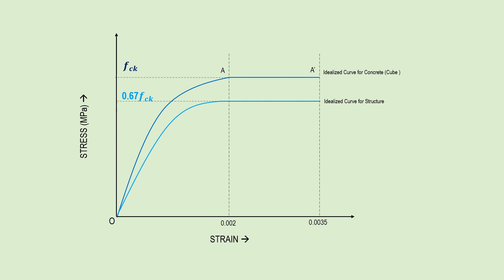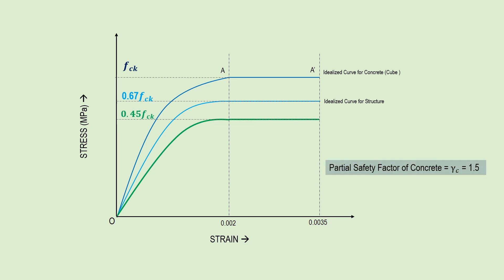In addition to the first two curves, for the design of real structures and based on limit state theory, we always consider a partial safety factor — not just for loads, but also for materials. We have a partial safety factor for loads, for concrete, and for steel. In the limit state method, the partial safety factor for concrete is 1.5. We divide the strength value by this factor to determine the design stress: 0.67 FCK divided by 1.5 gives 0.45 FCK. The stress-strain curve for a concrete strength of 0.45 FCK, shown in green, is the design curve used for concrete.